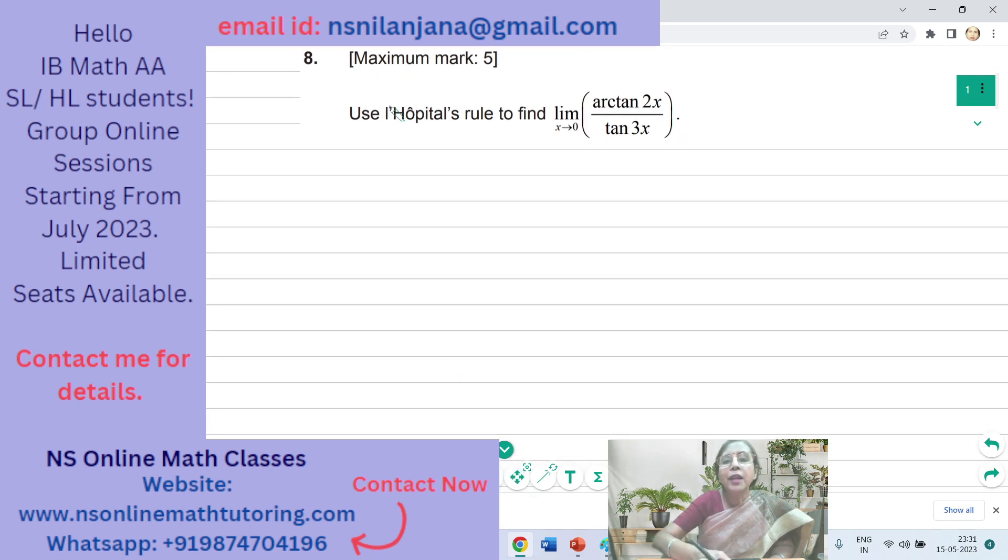We will be solving question number 8. It contains 5 marks. And the question says, use L'Hôpital's rule to find limit x extending to 0 of arctan 2x over tan 3x. We have to take the limit, but why did they ask for using L'Hôpital's rule? They have asked us to use L'Hôpital's rule, so we don't have any other choice. But could we avoid using L'Hôpital's rule? Let us check.